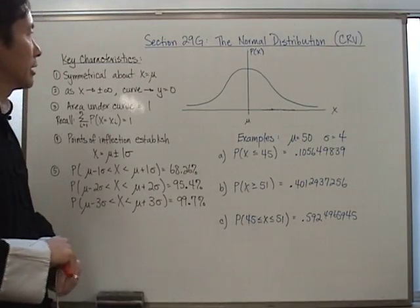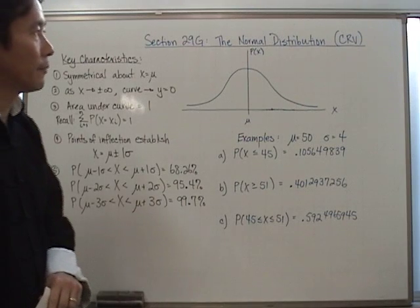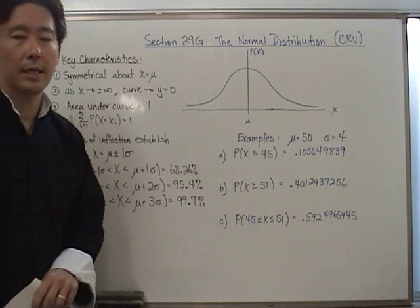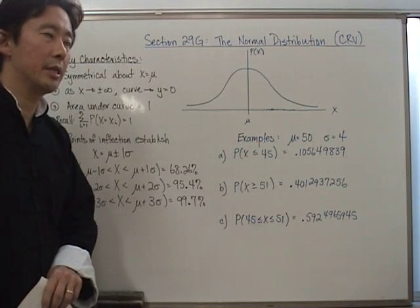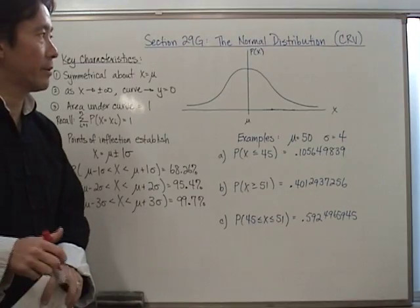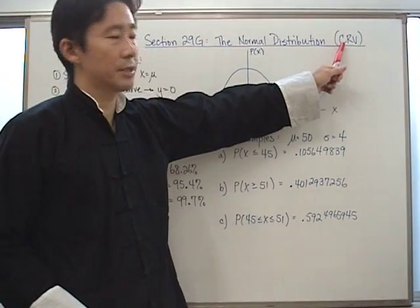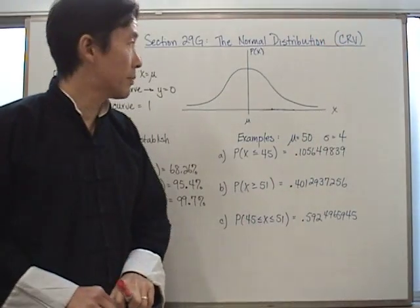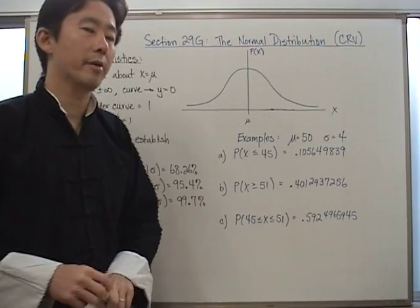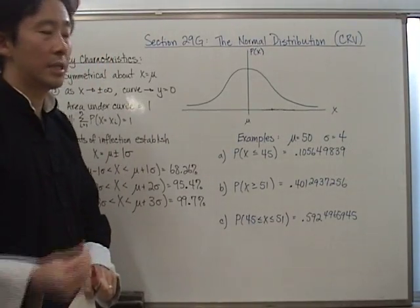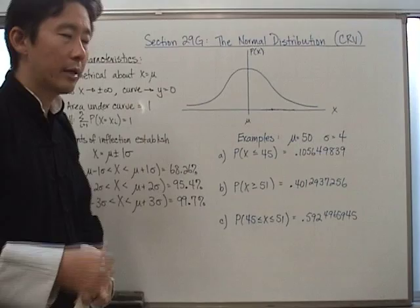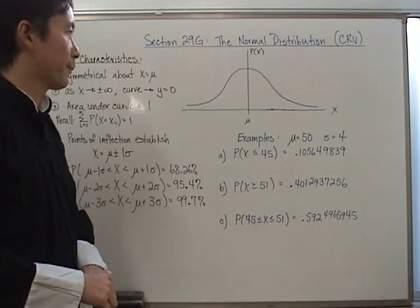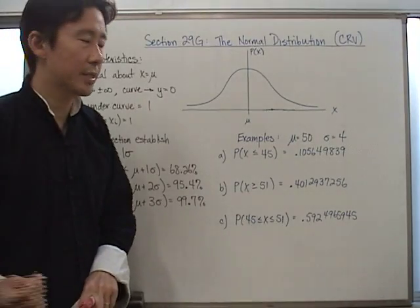Let's take a look at section 29g, which is called the normal distribution. This is going to be slightly different from what we've been dealing with before because this is the first time we're dealing with a continuous random variable. Notice that before we've always been dealing with the discrete random variable, but now we're moving to the continuous random variable. The principles are the same — it's just a different type of random variable.